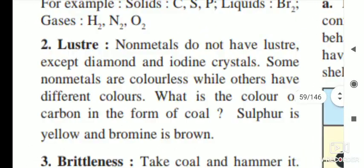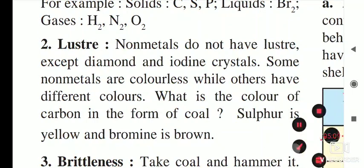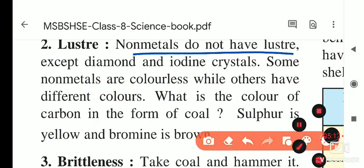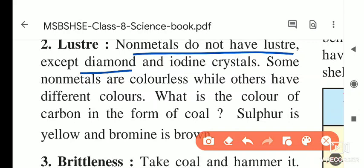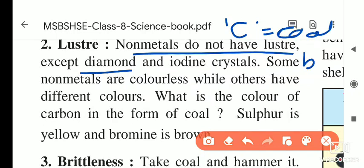Non-metals do not have luster, except diamond. Diamond is pure carbon — coal is black but diamond shines. Iodine crystals also shine. So diamond and iodine crystals are exceptions to the rule that non-metals do not have luster.